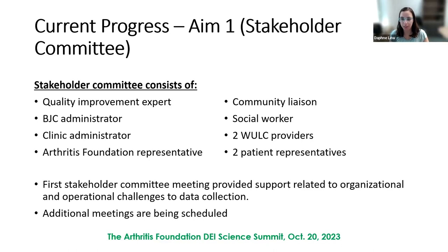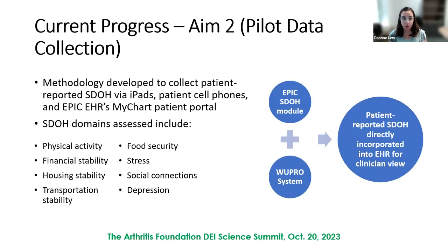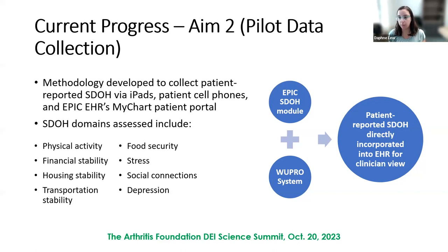For AIM-2, our goal was to begin collecting data. We developed a methodology that allowed us to collect patient-reported social determinants of health by combining an existing patient-reported outcomes system at Washington University with the SDOH module in the EPIC electronic health record. This allowed patients to report their SDOH in a patient-reported fashion, incorporating that information directly into the electronic health record in real time for clinicians to view during the clinical encounter.